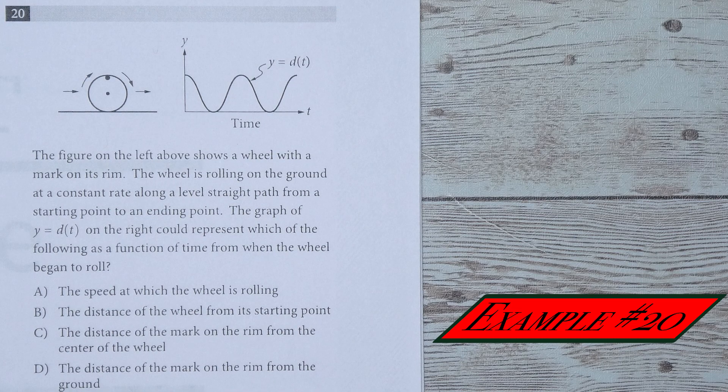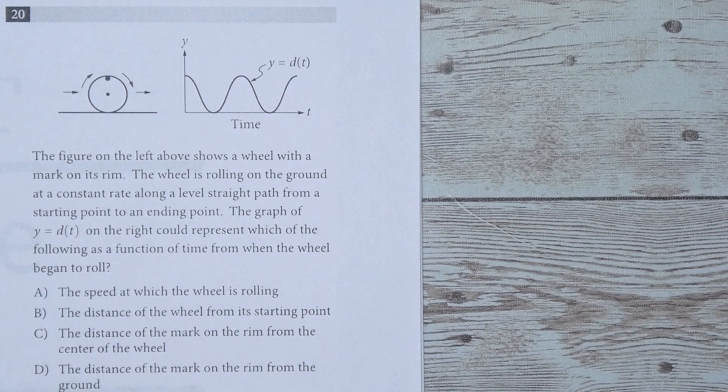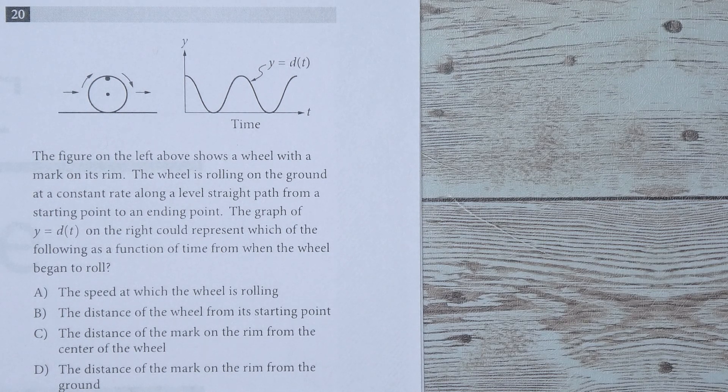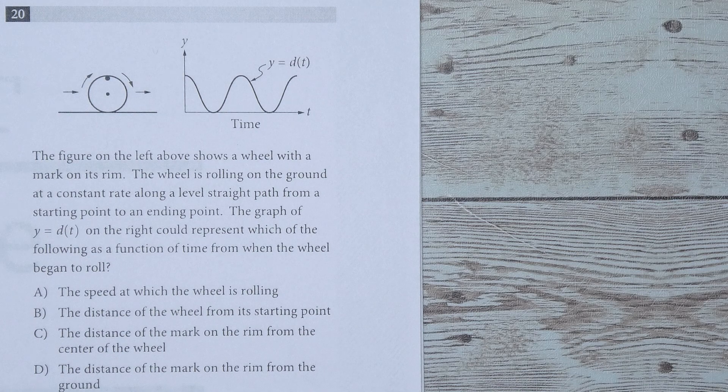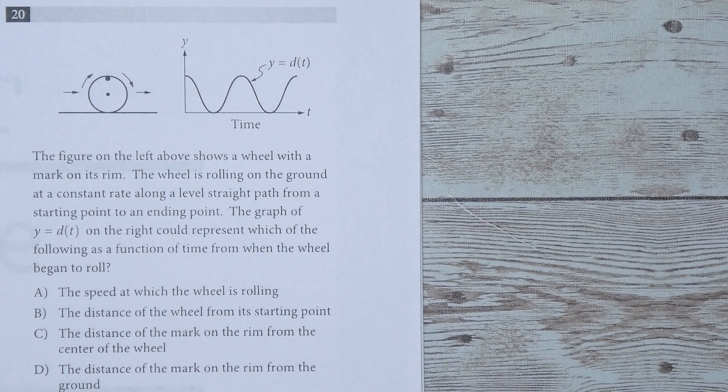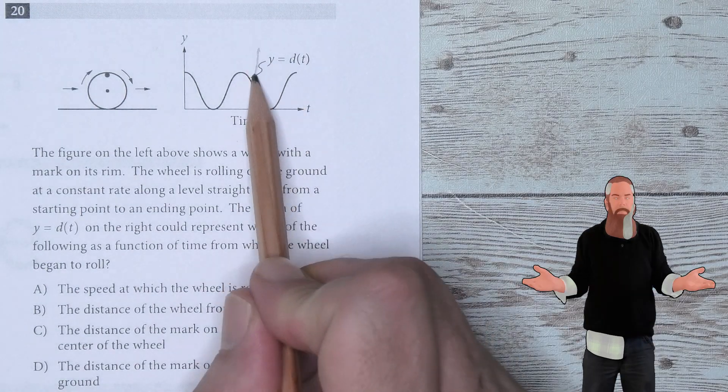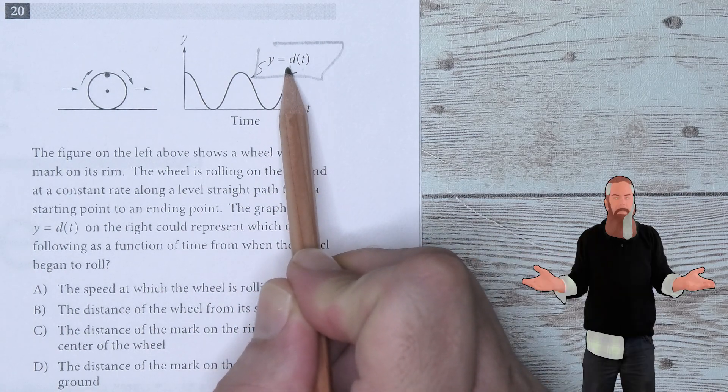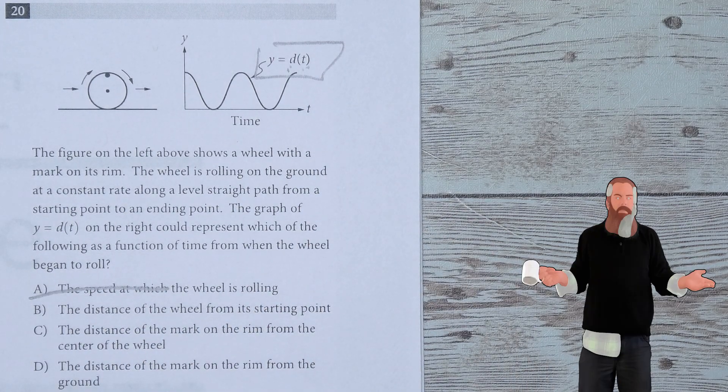The figure on the left shows a wheel with a mark on its rim. The wheel is rolling on the ground at a constant rate along a level straight path from a starting point to an ending point. The graph of Y = d(t) on the right could represent which of the following as a function of time from when the wheel begins to roll? The key here is Y = d as a function of t, distance as a function of time. If it doesn't talk about distance, we eliminate it as an answer.